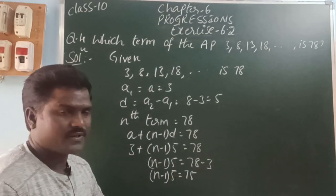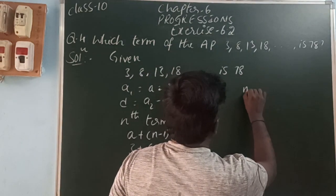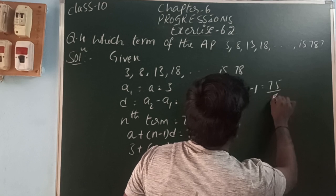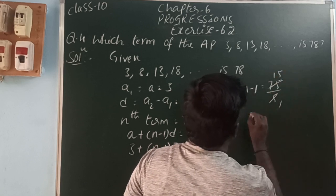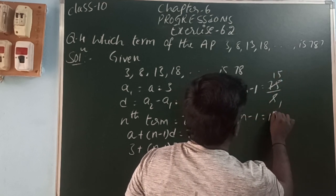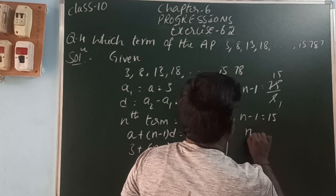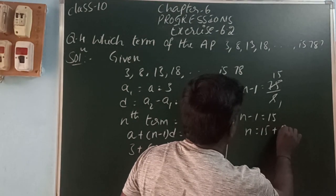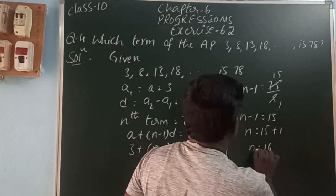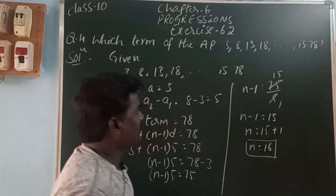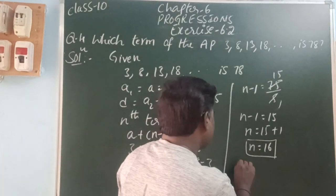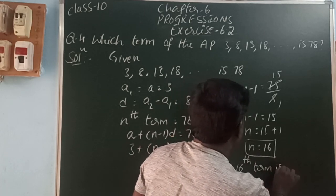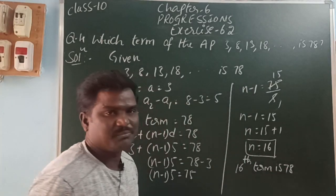So n minus 1 into 5 is equal to 78 minus 3, which is 75. The 5 goes to divide the other side, so n minus 1 is equal to 75 by 5. That is 15. So n minus 1 is equal to 15, therefore n is equal to 15 plus 1, which is 16. So which term is 78? The 16th term is 78 in the given AP.